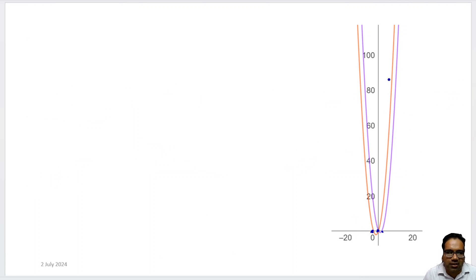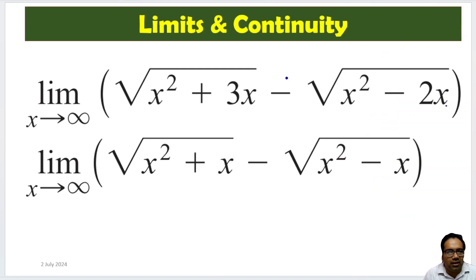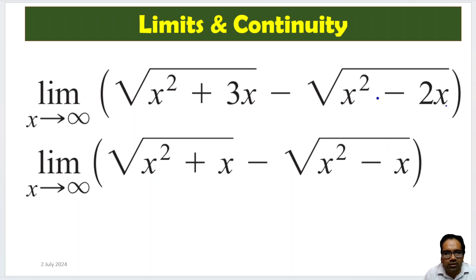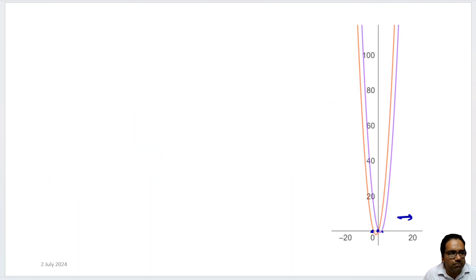Now if you see these graphs, they are almost very similar, very close, and as x increases, these graphs will keep getting closer and closer. Obviously the difference should be a very small number. If one was facing upward and the other was facing downward, the difference would have widened. But in this case both are going up — both are running in the same direction — so obviously at infinity it looks like the distance is reducing between them.